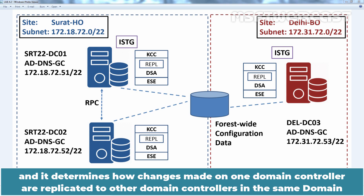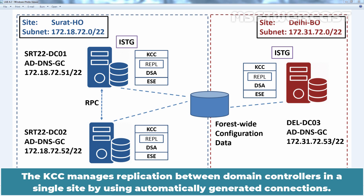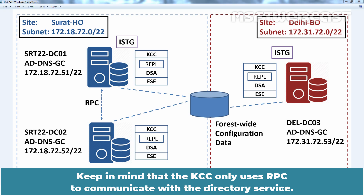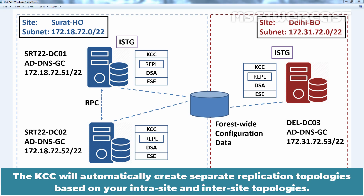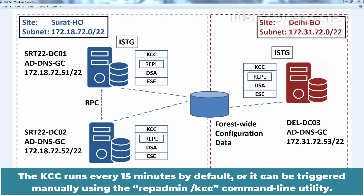Changes are replicated to other domain controllers in the same domain or in the same Active Directory forest. The KCC manages replication between domain controllers in a single site by using automatically generated connections. The KCC reads configuration data and reads and writes connection objects for domain controllers. Keep in mind that the KCC only uses RPC to communicate with directory services. The KCC runs every 15 minutes by default, or it can be triggered manually using the repadmin /kcc command line utility.